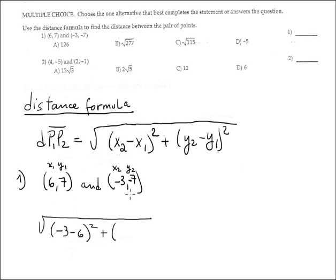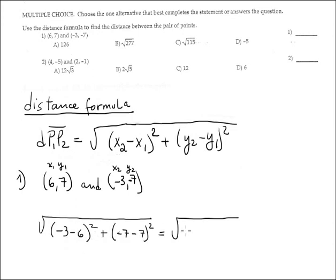Plus, open parenthesis, Y — Y is the same, Y2. Who is Y2? Negative 7. Minus — minus of the formula — and positive 7, squared. So far we have square root of negative 3 minus negative 6 is negative 9, and negative 9 squared.